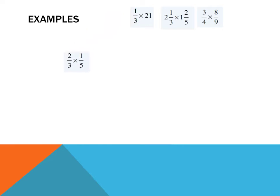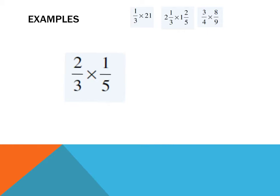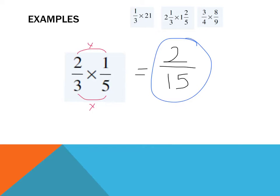Let's look at this first example: two-thirds times one-fifth. When we multiply two fractions together, all we have to do is multiply the numerator by the numerator and the denominator by the denominator. So that becomes one times two is two, and three times five is fifteen. The main question I have to ask myself at this point is: is there a number that goes into two that also goes into fifteen, or can I write two-fifteenths in a more simple way? The answer is no, so my answer stays that way.